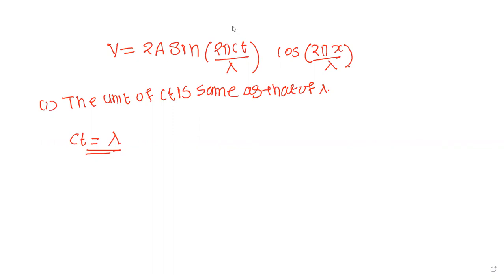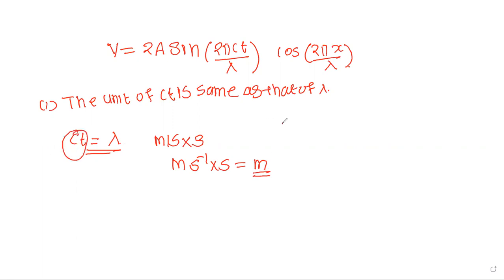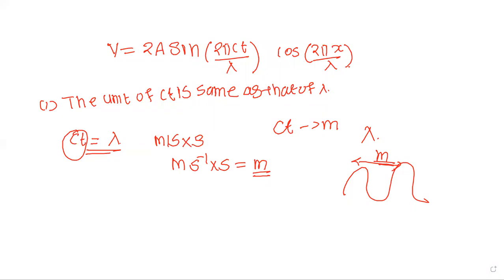I'll tackle it: c × t means the unit of c is meter per second, times t which is second, so it gives meter. Similarly, lambda is the distance between two adjacent crests or troughs, so it is also measured in meters. Hence the given statement is correct.